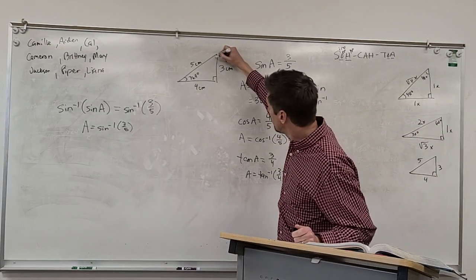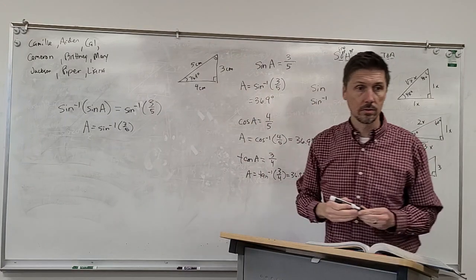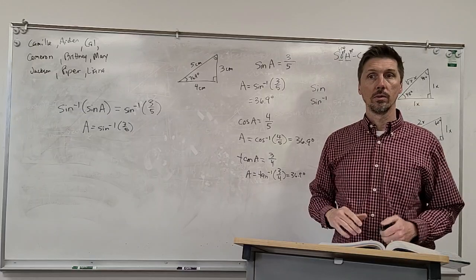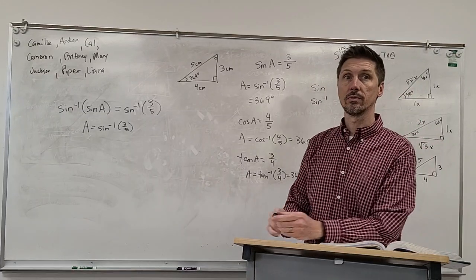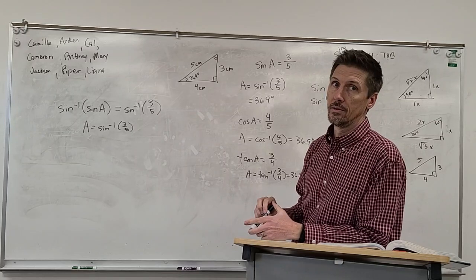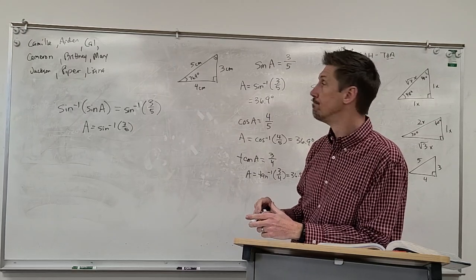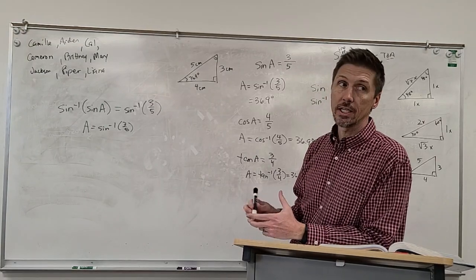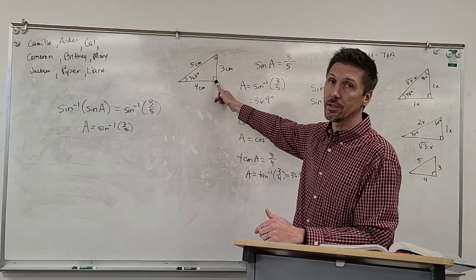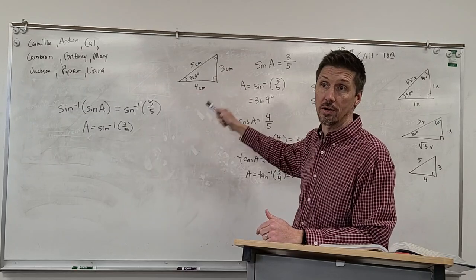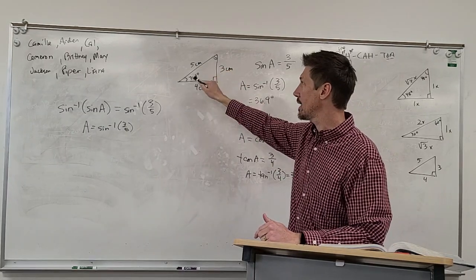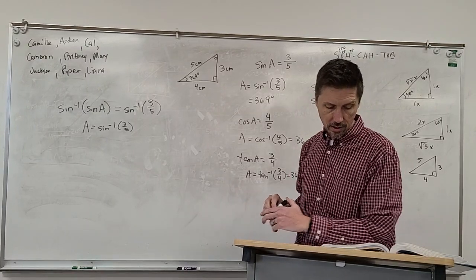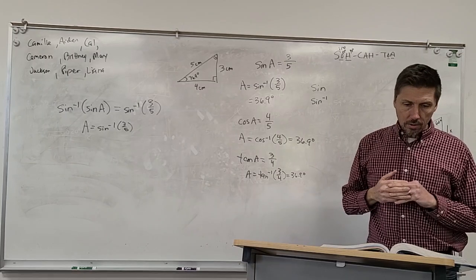What if I asked you to find the other angle? The easiest way: since we know this is 90 degrees and all angles in a triangle total 180, those two non-right angles must add up to 90. So the other angle is 90 minus 36.9 degrees.